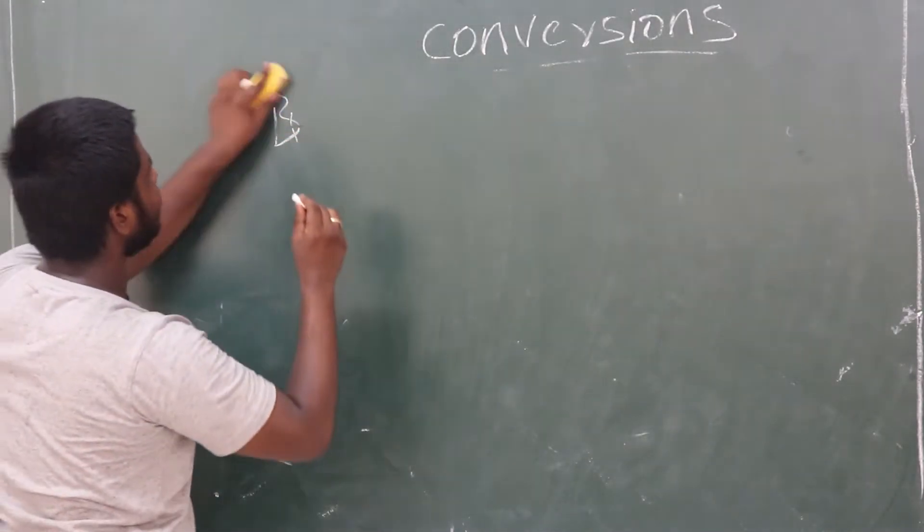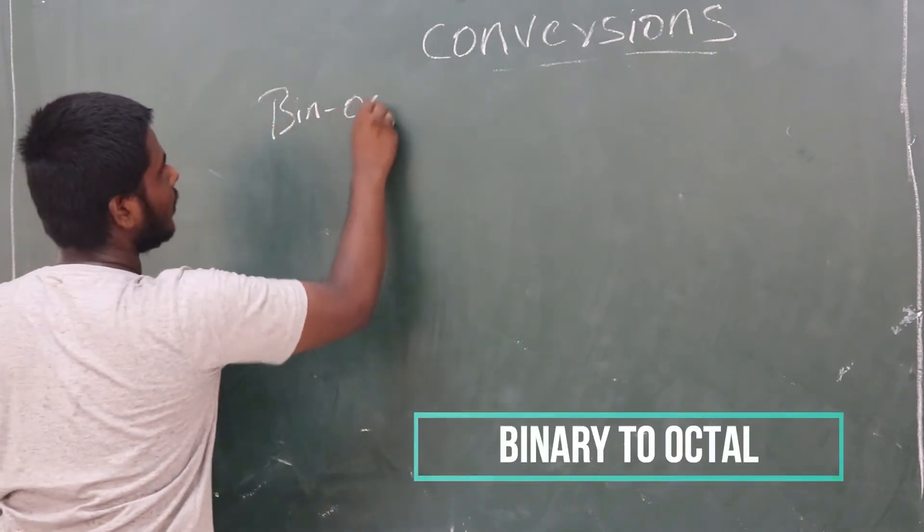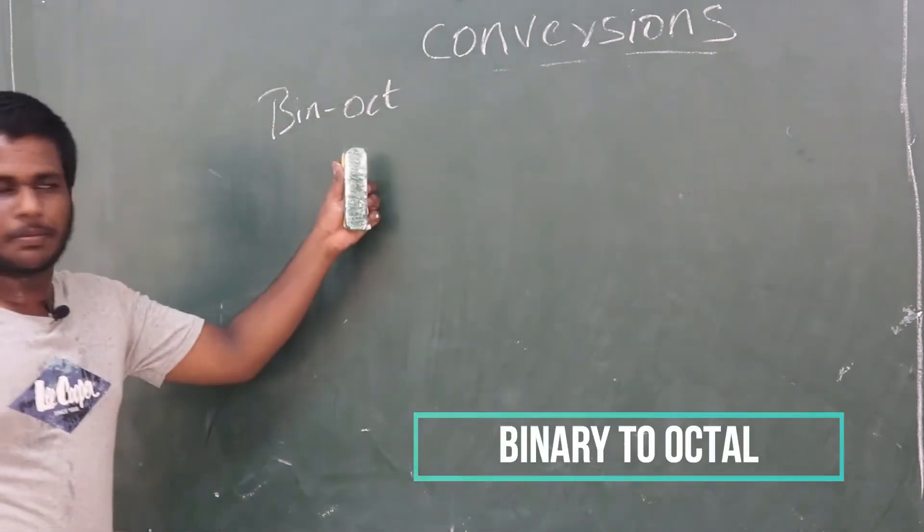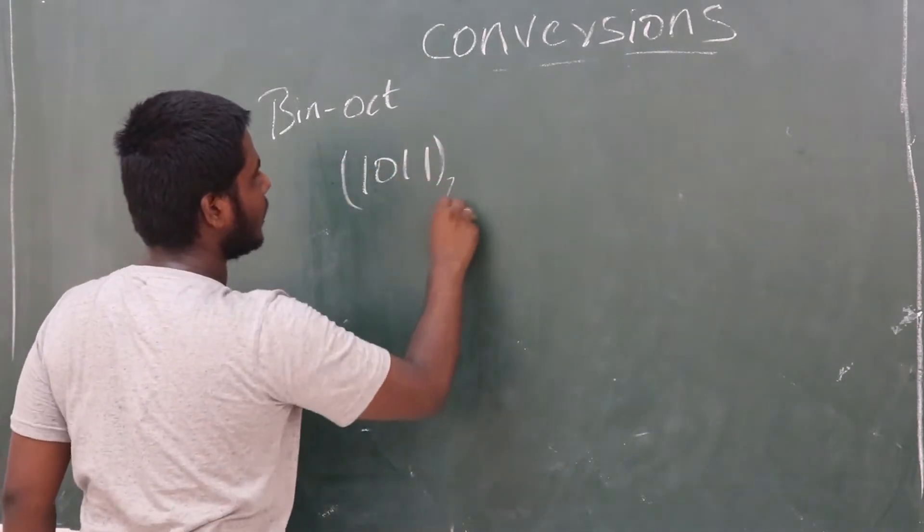Binary to octal representation. The binary number is 1, 0, 1, 1, base 2.